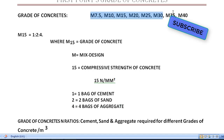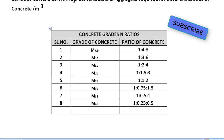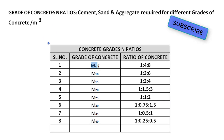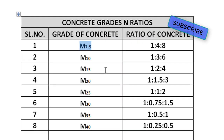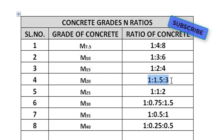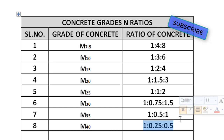Now we will look at M7.5, M10, M15, M20 values in a table. M7.5 grade of concrete ratio is 1 is to 4 is to 8. M10 grade of concrete is 1 is to 3 is to 6. M15 grade of concrete is 1 is to 2 is to 4. M20 grade of concrete is 1 is to 1.5 is to 3. M25 grade of concrete is 1 is to 1 is to 2. M30, M35, and M40 use design mix.